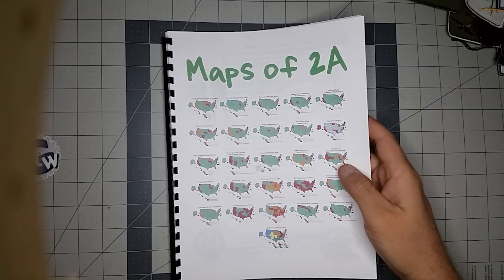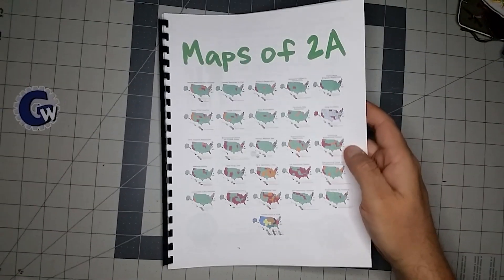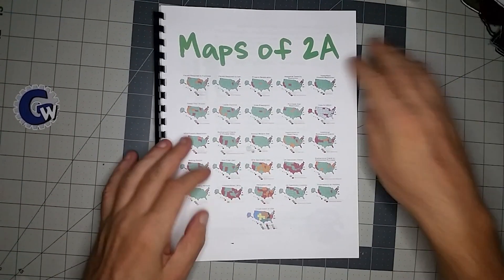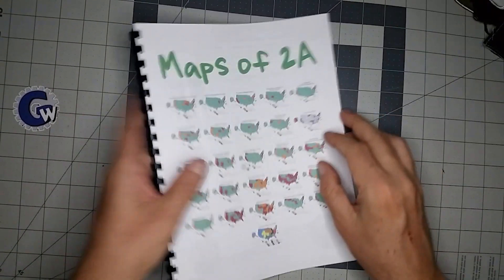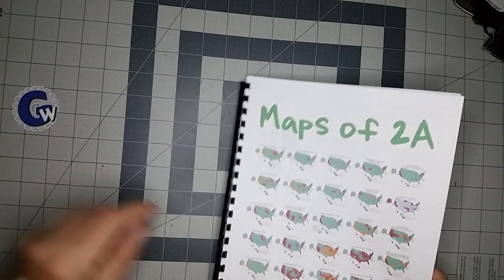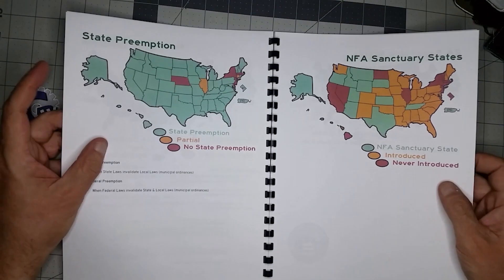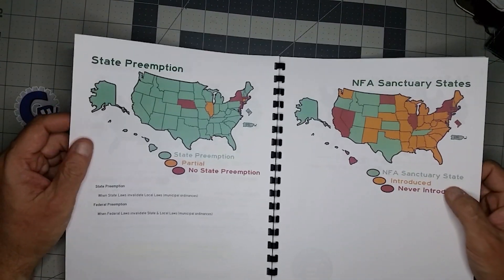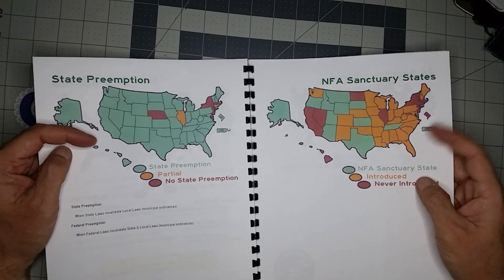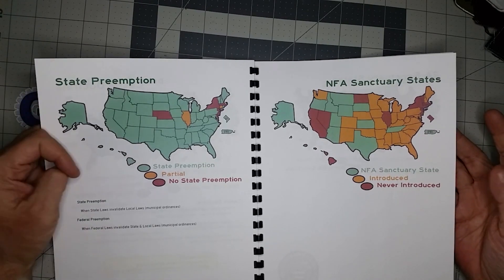We're taking a look at our Maps of 2A. We printed out a bunch of the maps that we use over on the Minuteman University project, pushing all these patches out of the way, and we're digging into our maps. We're taking a look at some of the things that we've created maps for on the Minuteman University website to illustrate some of the various facets of 2A.